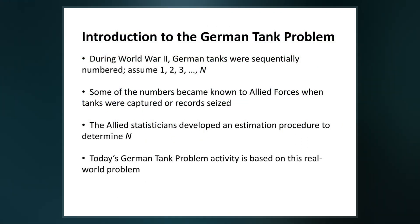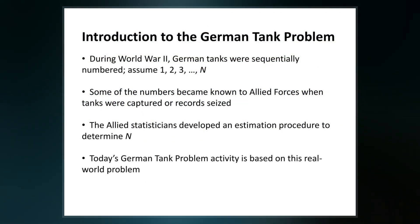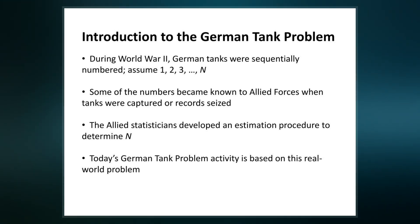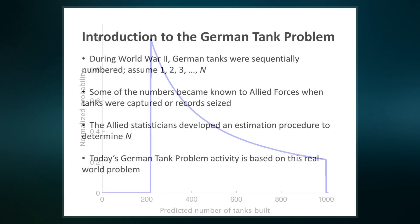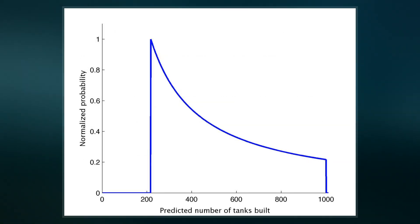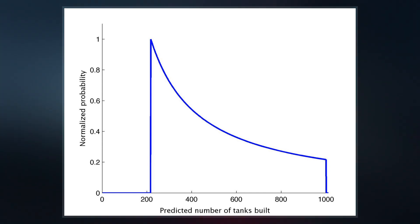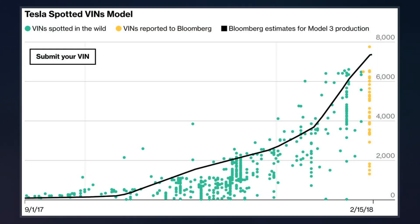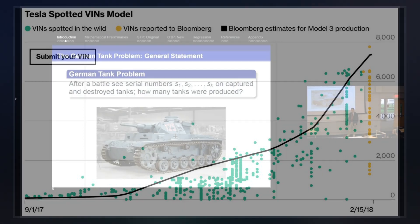The problem can be approached using either frequentist inference or Bayesian inference, leading to different results. Estimating the population maximum based on a single sample yields divergent results, whereas estimation based on multiple samples is a practical estimation question whose answer is simple but not obvious.